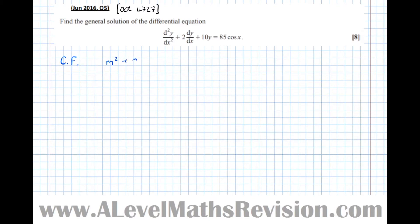So solving the auxiliary equation now, m² + 2m + 10 = 0. And then m plus both plus, and I can see here that it doesn't factorize.